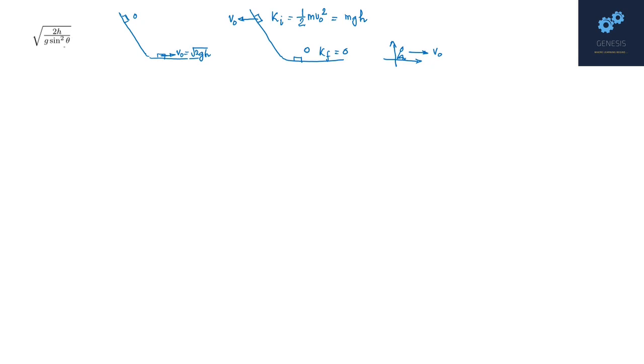So when you write the change in kinetic energy, Δk comes out as minus mgh. Now if I write the work-energy theorem, Δk equals work done by normal plus work done by gravity. The change in kinetic energy is minus mgh, work done by normal is zero, plus work done by gravity is mgh, and herein it appears there is a contradiction.